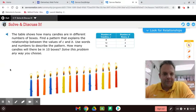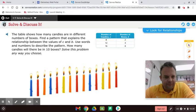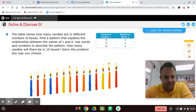The table shows how many candles are in different numbers of boxes. Find a pattern that explains the relationship between the values of C and B. Use words and numbers to describe the pattern. How many candles will there be in ten boxes? Solve this problem any way you choose.